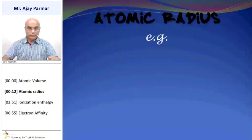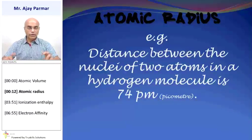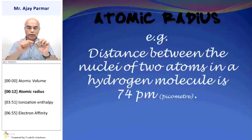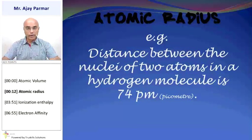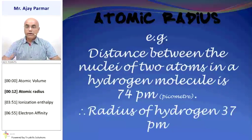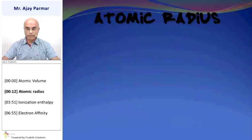For example, the distance between two nuclei of atoms in a hydrogen molecule — supposing this hydrogen molecule — whatever the distance between the two given nuclei, that is 74 pm, that is 74 picometer. Then the radius of hydrogen would be 37 pm, that is half of 74, so that is 37 pm.